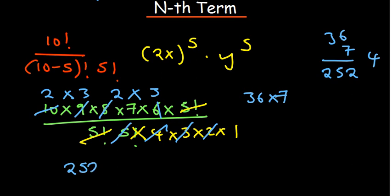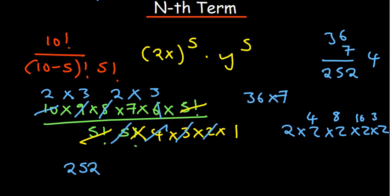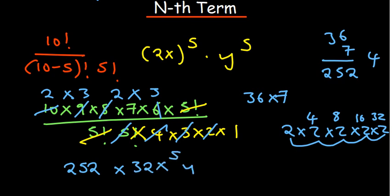I hope I'm right — there are videos where I've made mistakes with such calculations. 2 to the power 5 is 2 × 2 × 2 × 2 × 2: that's 4, 8, 16, 32. So we have 252 multiplied by 32, times x to the power 5, times y to the power 5. Multiply 32 and 252 to get your final solution.